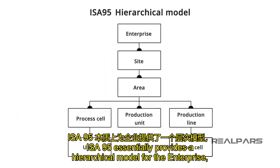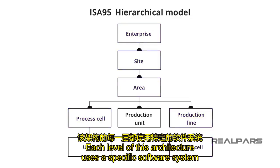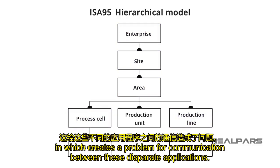ISA-95 essentially provides a hierarchical model for the enterprise, site, area, line, and cell. Each level of this architecture uses a specific software system to gather data for that part of the organization's needs, which creates a problem for communication between these disparate applications.